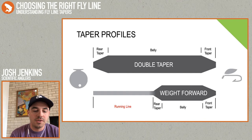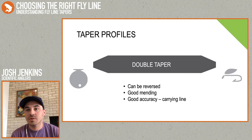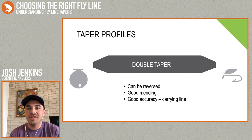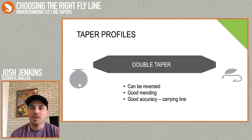A double taper is great for a few reasons. First and foremost, most double tapers are symmetric, so you can actually reverse them — if you wear out one end, you can flip it around and use the other end, giving you basically double the life out of your fly line. Because that belly is really long and you have mass for most of the line, it's also good for mending. And because you don't drop down to a thin diameter running line that's going to hinge, you can actually false cast a pretty good amount of line, which makes it a little bit more accurate compared to a shorter head weight forward line.